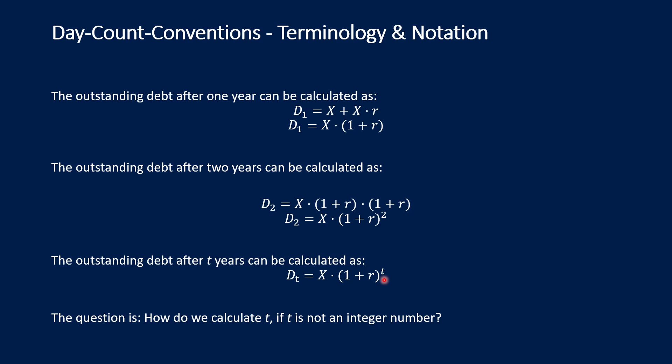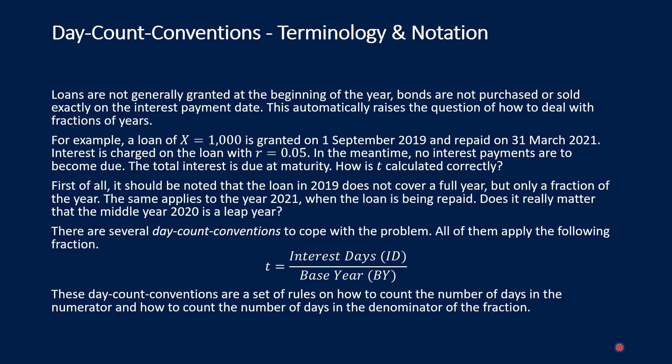The question is: how do we calculate T? It is straightforward as long as years are integer numbers like one, two, or several years. But as soon as we have fractions of years — like two and a half years, or we don't start at the end of a year but somewhere in the middle — it is no longer straightforward because we don't know what T is. Loans are not generally granted at the beginning of the year, and bonds are not purchased or sold exactly on the interest payment date. This raises the question of how to deal with fractions of years.